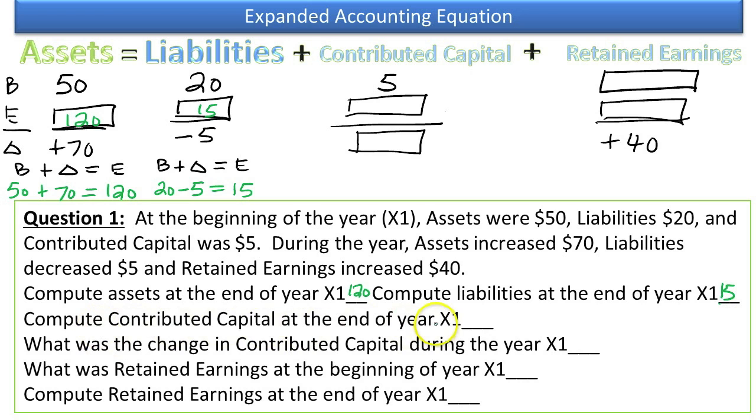Compute contributed capital at the end of the year, X1. Well, we cannot work vertically in this case, because there are three variables and we're missing two. You cannot solve that problem with the information given. However, we can solve horizontally for the change, and then we can solve for the ending. Let's do that.